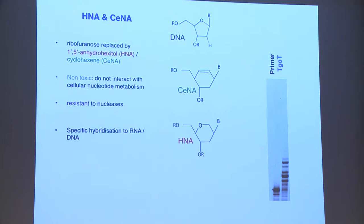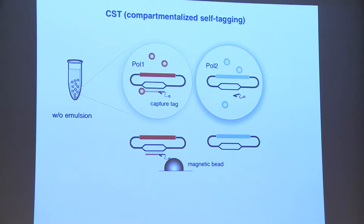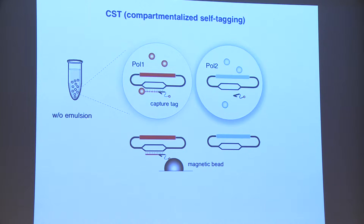At the time, this was not good enough for the type of screening and selection systems that were available. So we built our own — this is called compartmentalized self-tagging, CST. It's based on a positive feedback loop whereby a polymerase tags its own encoding gene, or the genetic element containing its own encoding gene, by extension of a primer. This primer hybridizes only in a metastable way to the plasmid, so it needs to be stabilized by this extension, and the primer also has a 5' capture tag.